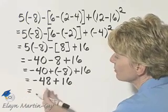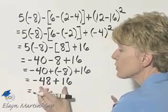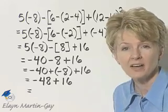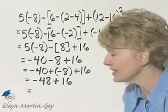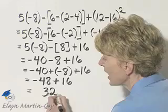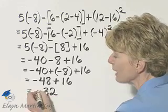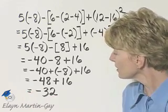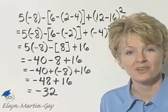And now I'm adding two numbers with different signs, so we subtract absolute values. 48 minus 16 is 32, and we keep the sign of the number with a larger absolute value, so the result is negative 32. 48 minus 16 is 32.